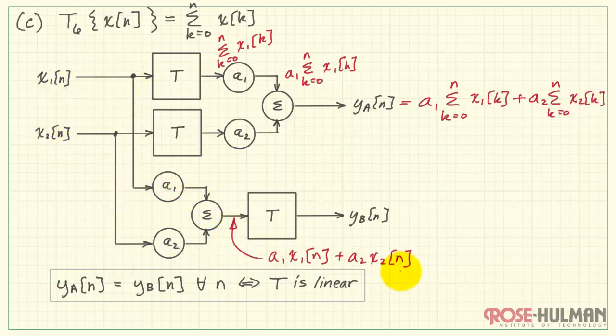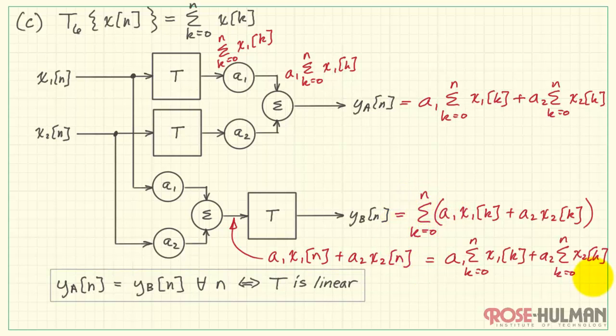We form our pre-scaled and summed version of these two inputs and present that as the input to our system T. Our system, then, will operate on this entire composite input. Now to compare these two, let's expand this summation a bit. We realize that the sum can be distributed across these terms, A1 X1. And we can also bring the A coefficients out front. When we compare, we find that YA equals YB for all N. Therefore, this system, T6, is linear.